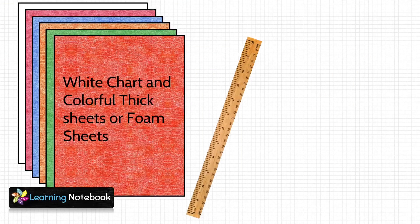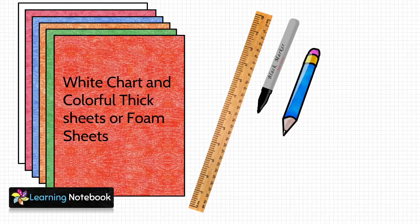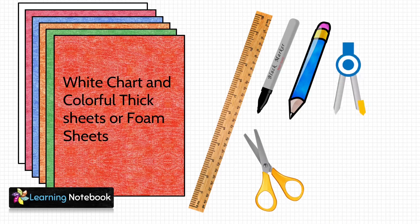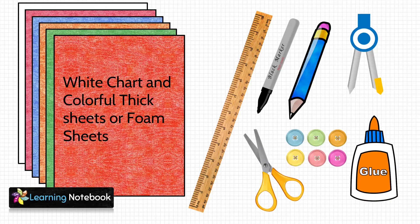For this activity we need one white chart, some colorful thick sheets, a ruler, a black marker pen, a pencil, a pair of scissors, a compass, a glue bottle, and few buttons.